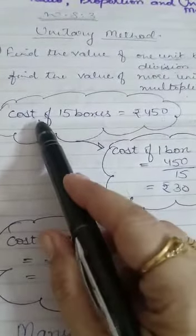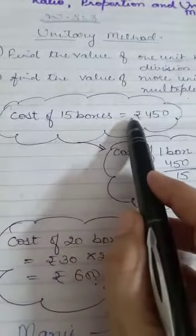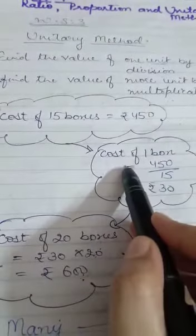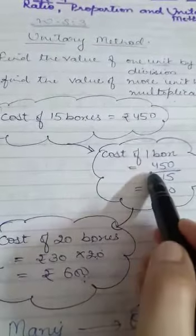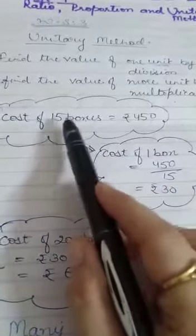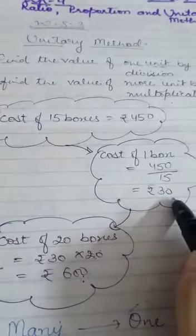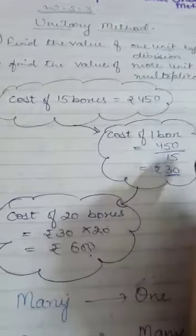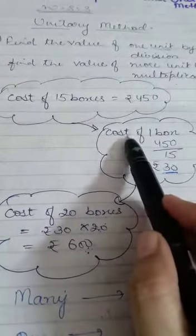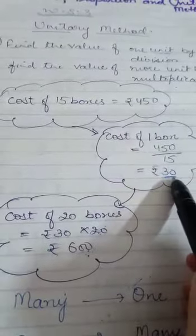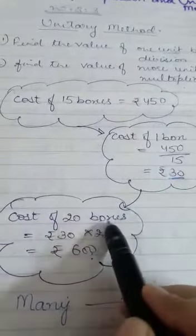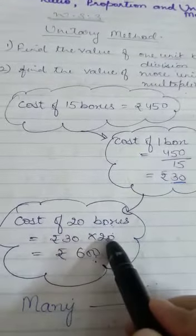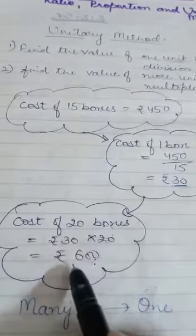First, cost of 15 boxes is equal to Rs. 450. We will calculate the value of 1 box: cost of 1 box is equal to Rs. 450 divided by 15, and we get Rs. 30. Now we have to calculate the cost of 20 boxes, so we will multiply Rs. 30 by 20, and the answer will be Rs. 600.